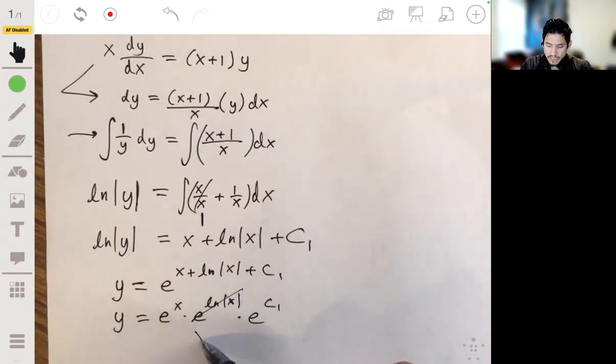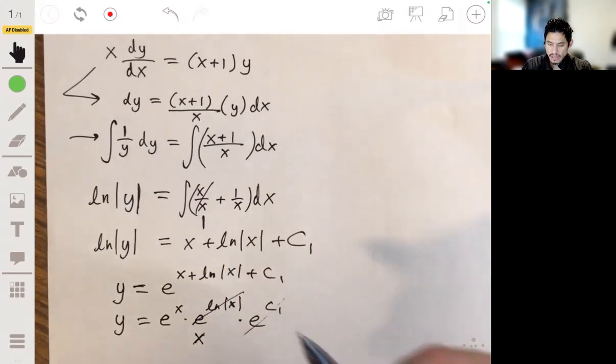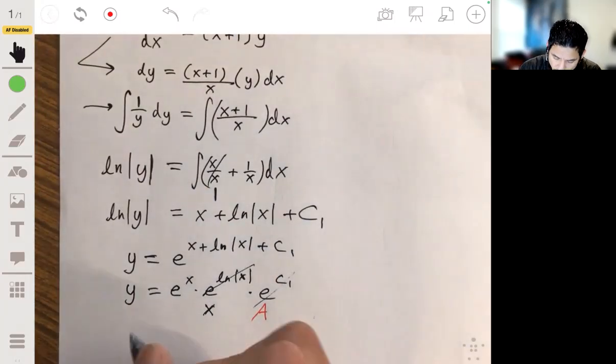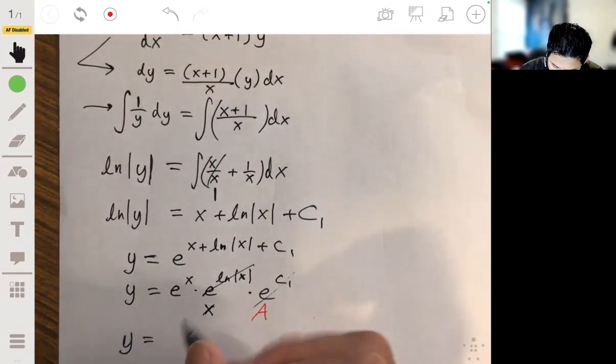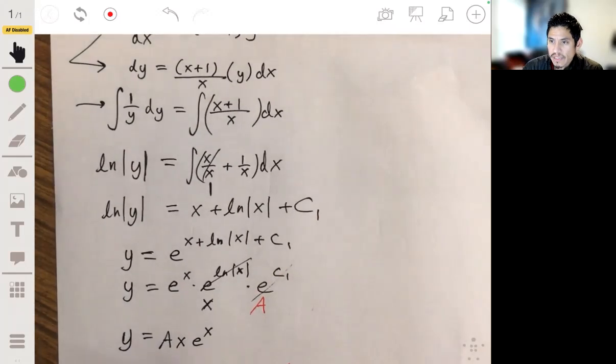This just becomes x, and then this here just becomes another constant. We can just call it a. And then we can omit the absolute value symbols. So y equals a times x e to the x.